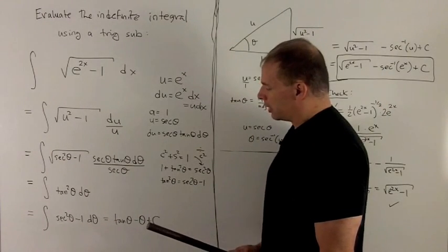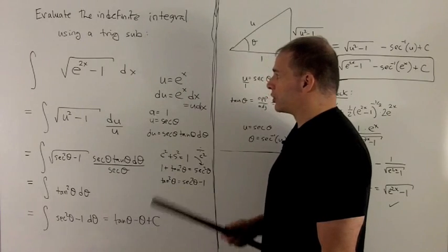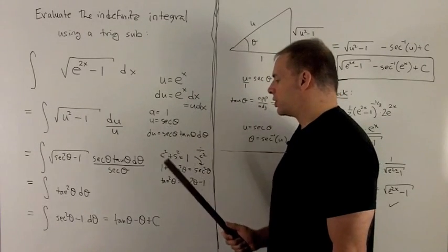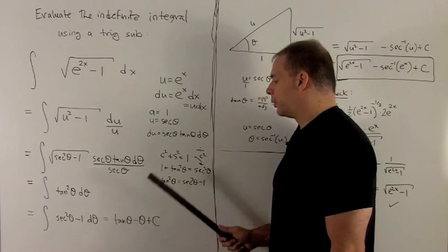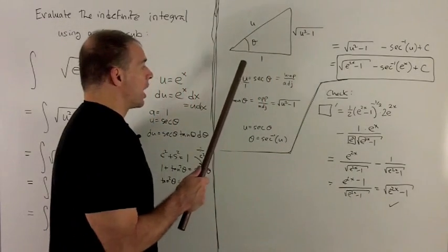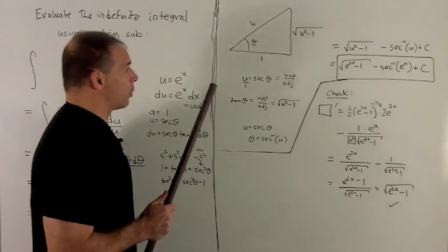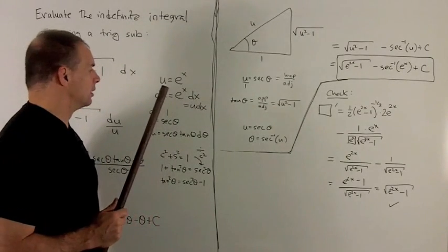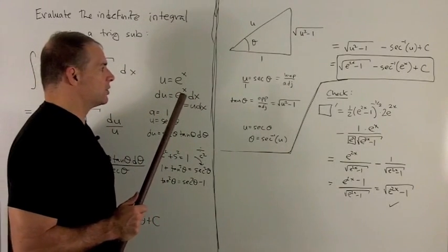We're not done though. Our answer is in terms of theta, but the original problem is given in terms of x, so we need to do a little bit more work. We do that by drawing a right triangle. On this triangle, I'm going to put in my theta, and then we're going to follow our nose to fill in the sides.